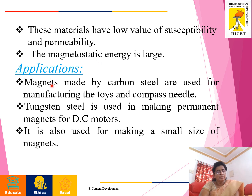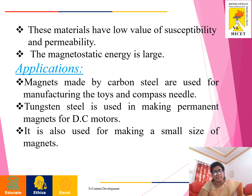Applications: magnets made by carbon steel are used for manufacturing toys and compass needles. Tungsten steel is used in making permanent magnets for DC motors. It is also used for making small size magnets.